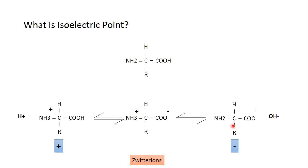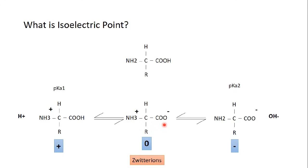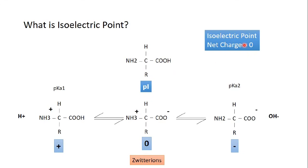This is what zwitterions means — the amino acid can be either negatively or positively charged according to the pH of the solution. The pH at which all the amino groups are protonated and the carboxyl groups are deprotonated is called pKa1. The pH at which the amino acid holds a negative charge is called pKa2. The very middle point between pKa1 and pKa2 — where half the amino groups are positively charged and the carboxyl groups are negatively charged, and the amino acid holds a zero charge — is called the isoelectric point.